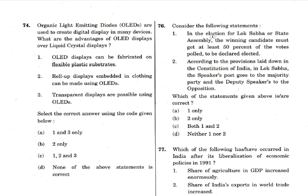Question 76: In the election for Lok Sabha or State Assembly, the winning candidate must get at least 50% of the votes polled to be declared elected. This is a totally wrong statement because in India even 20-30% votes can win, as long as it's the highest — first past the post system. So statement one is wrong.